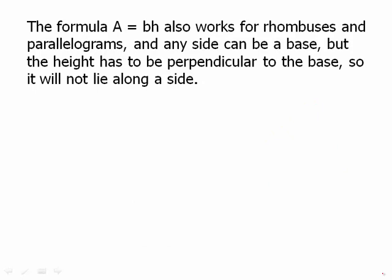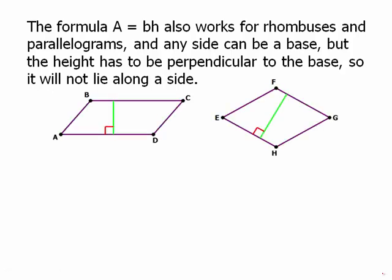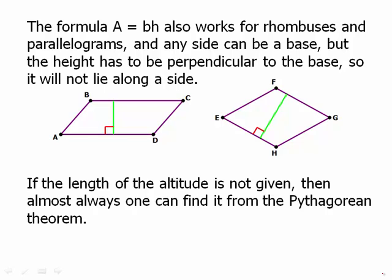The area A equals bh also works for rhombuses and parallelograms. Any side can be a base, but the height has to be perpendicular to the base. So the height will not lie along a side. Instead, the height will be what's called an altitude, a line perpendicular to the base, and so we need to find that height.